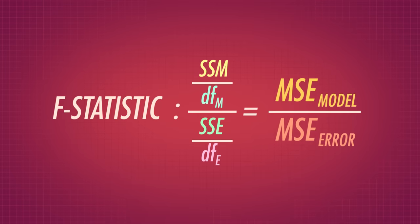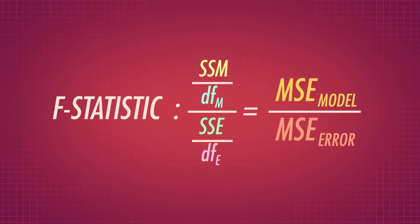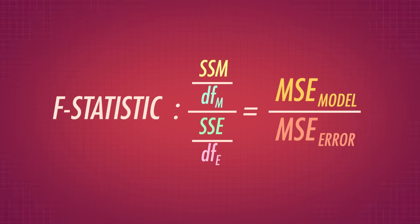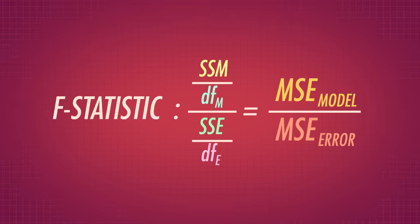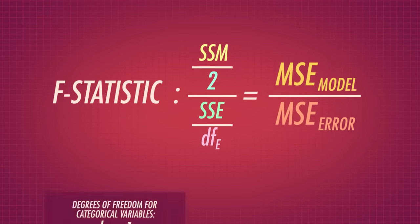Now that we have that information, we can calculate our F statistic, just like we did for regression. The F statistic compares how much variation our model accounts for versus how much it can't account for. The larger that F is, the more information our model is able to give us about our chocolate bar ratings. SSM is the variation our model explains, and SSE is the variation it doesn't explain. We want to compare the two, but we also need to account for the amount of independent information each one uses, so we divide each sums of squares by its degrees of freedom.